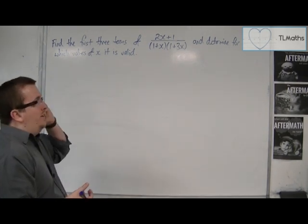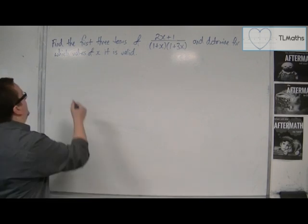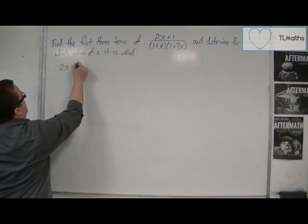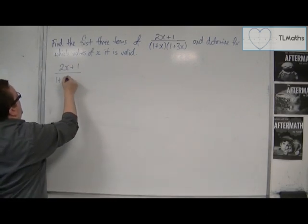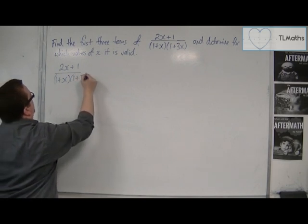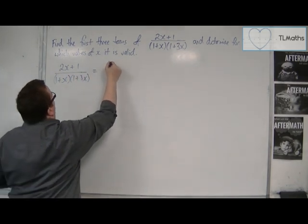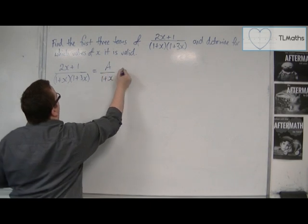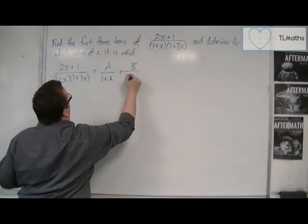So the first thing that I need to do is to split it up into partial fractions. So 2x plus 1 over 1 plus x, 1 plus 3x,